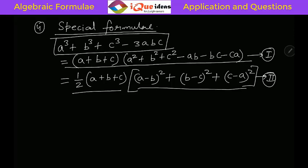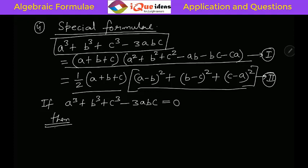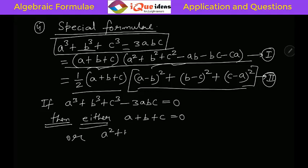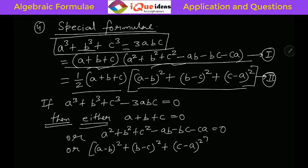Now why is this important? Because there are direct questions asked on a special case of this. If we say that a cube plus b cube plus c cube minus 3abc is zero, then either a plus b plus c equals zero, or a square plus b square plus c square minus ab minus bc minus ca equals zero, or a minus b whole square plus b minus c whole square plus c minus a whole square equals zero.